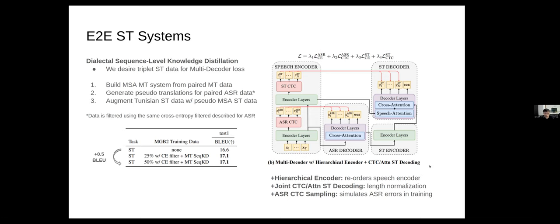To use the dialectal data, one thing that we need to consider is that our loss function here requires a triplet of ST data if we want to stick to just using this one loss function, which is a multitask interpolation. So in order to make our paired ASR and MT data compatible with this loss function, we first build a MSA MT system from the paired MT data. We use this system to generate pseudo translations for the paired ASR data.